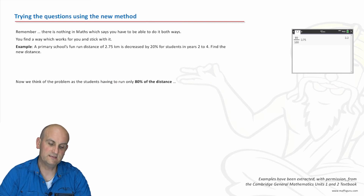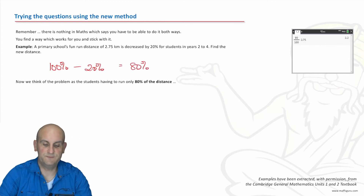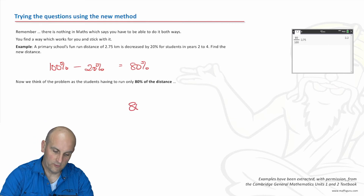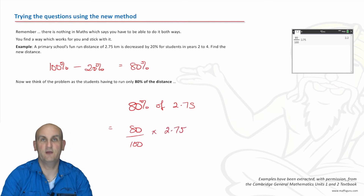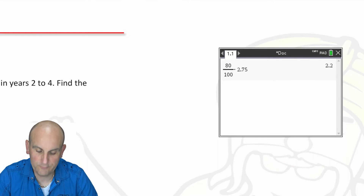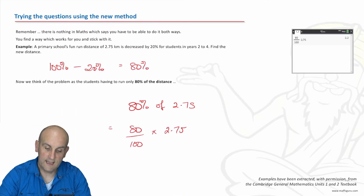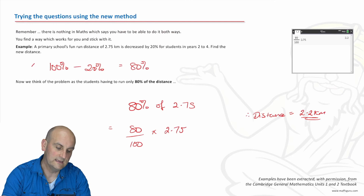Primary school's fun run distance of 2.75 is decreased by 20%. I started with 100% and I'm decreasing by 20%, which gives me 80% of what I started with. So 80% of 2.75 — percent is divided by 100, 'of' is times 2.75 — gives me 2.2. Therefore, my distance in one calculation is 2.2 kilometers. I wouldn't add that on or take it away — I've done all of that in this single step.